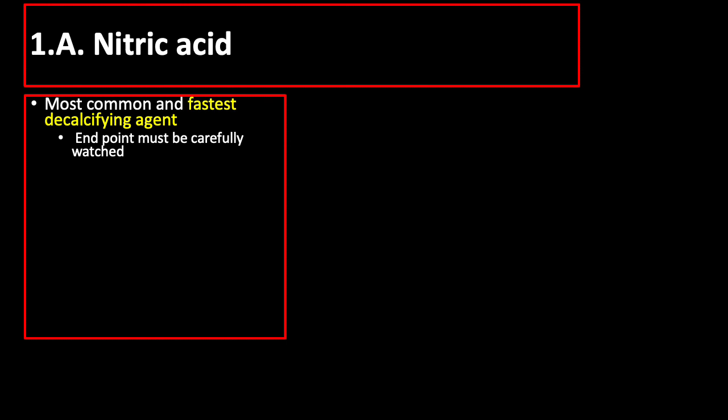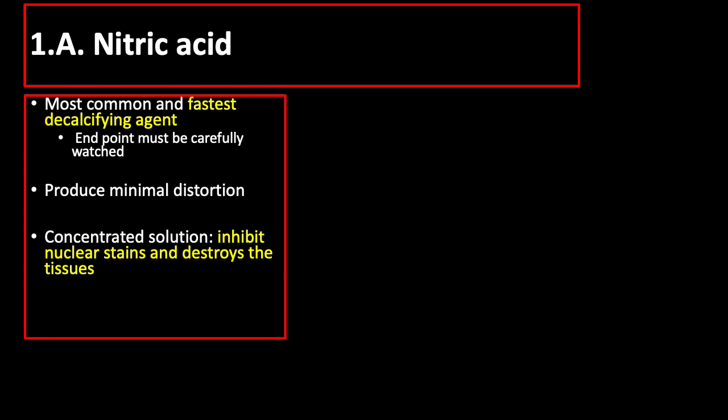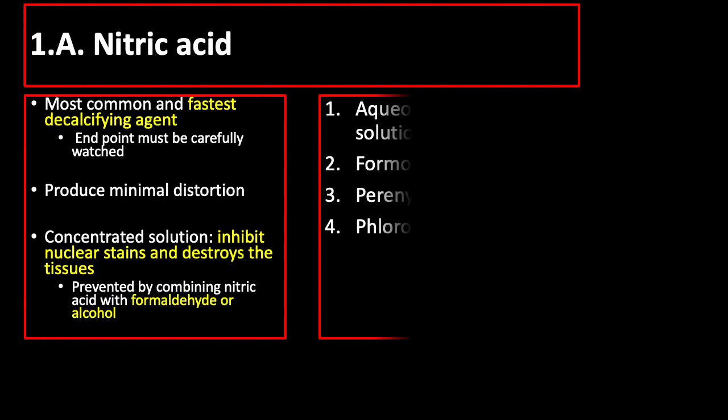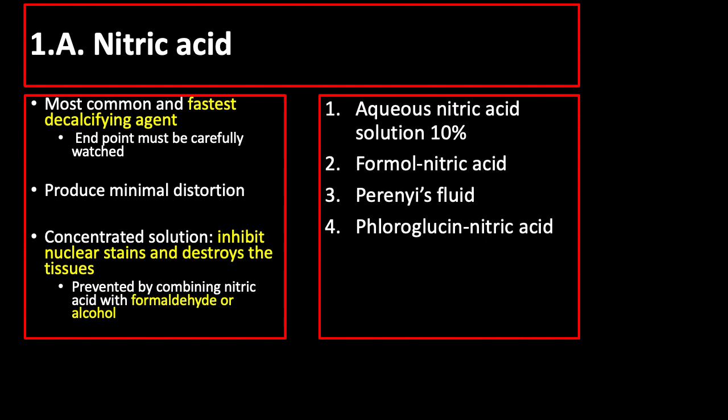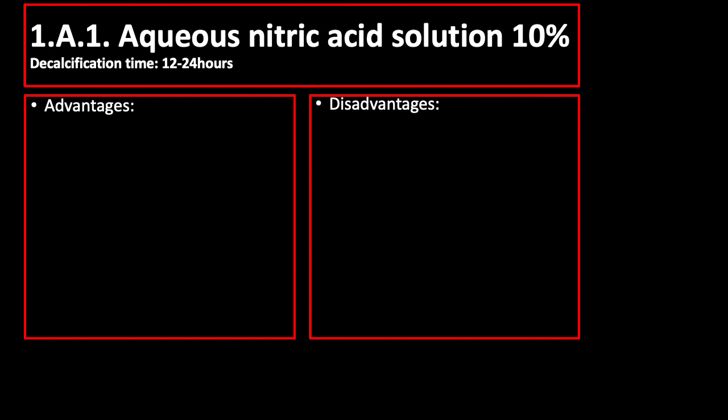The first strong acid is nitric acid, which is the most common and fastest decalcifying agent used so far, producing minimal distortion of tissues, so it is recommended for routine purposes. However, it inhibits nuclear stains and destroys the tissues if used at concentrated solution. This may be prevented by combining nitric acid with formaldehyde or alcohol. Examples of nitric acid decalcifying agents are Accus nitric acid solution 10%, formal nitric acid, perinease fluid, and fluoroglucine nitric acid.